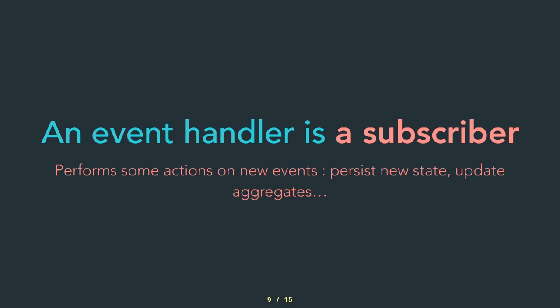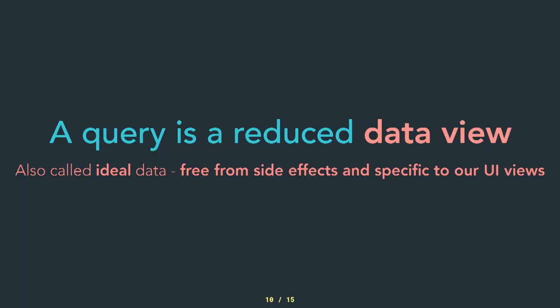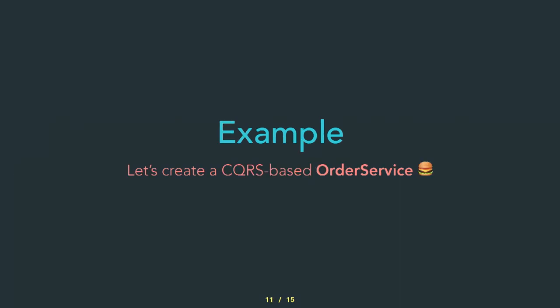Then we have an event handler, which is kind of the subscriber for all events — they are broadcast to the system. It performs some action on new events, passes new states, and updates aggregates. Finally you have a query, which is a reduced data view. It's also code and it's ideal data — like the perfect data for your front end.